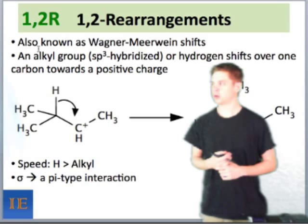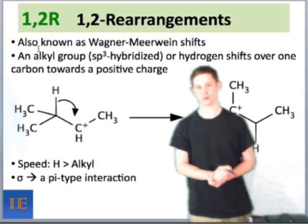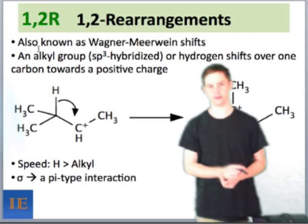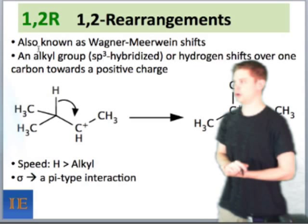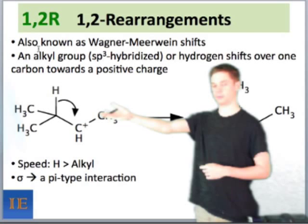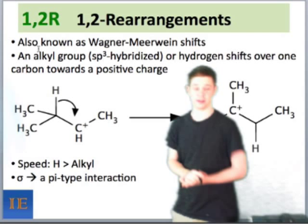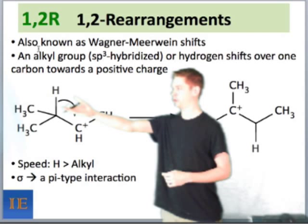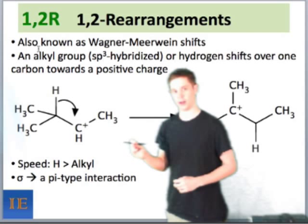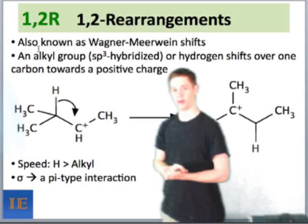These are also known as Wagner-Meerwein shifts. What happens in these 1-2 rearrangements or carbocation rearrangements is an alkyl group that is sp3 hybridized, or a hydrogen, shifts over one carbon towards a positive charge. Here's an example employing a hydrogen — you can also imagine groups like methyl, ethyl, butyl, etc., being located where that hydrogen is. We draw the curved arrow such that the bond migrates towards the positive charge, and that leads to a new bond where the cation was, and a cation left behind on the carbon that no longer contains that bond.